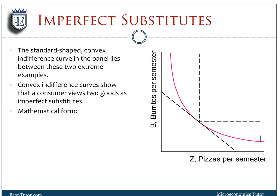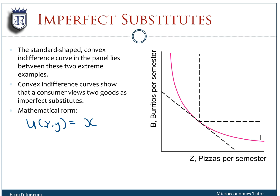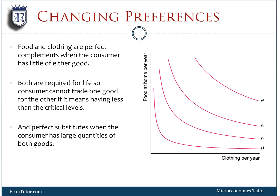Most of the time we deal with imperfect substitutes, which are somewhere between perfect substitutes and perfect complements. The convex indifference curves we typically work with are imperfect substitutes — the most realistic case. The mathematical form is the Cobb-Douglas: X^α · Y^β, or in log form: α·ln(X) + β·ln(Y). Note that this plus sign is different from perfect substitutes — because of the logarithms, this is still a convex function.